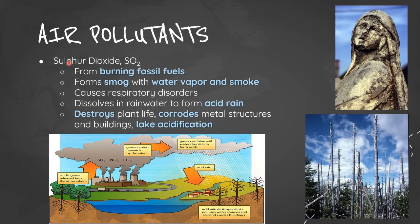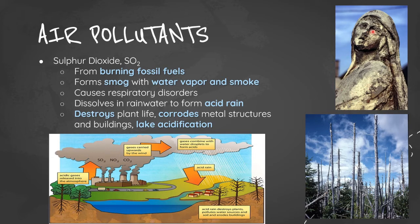The next air pollutant is sulfur dioxide (SO₂), which also comes from burning fossil fuels. It can form smog with water vapor and smoke, and causes respiratory illnesses. Importantly, sulfur dioxide dissolves in rainwater to form acid rain, which can destroy plant life, corrode metallic structures and buildings, and cause water body acidification.